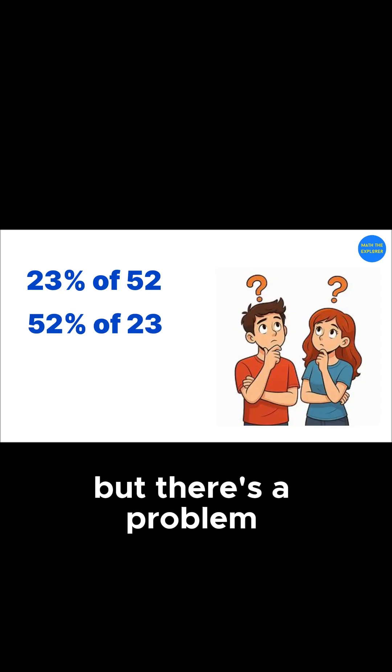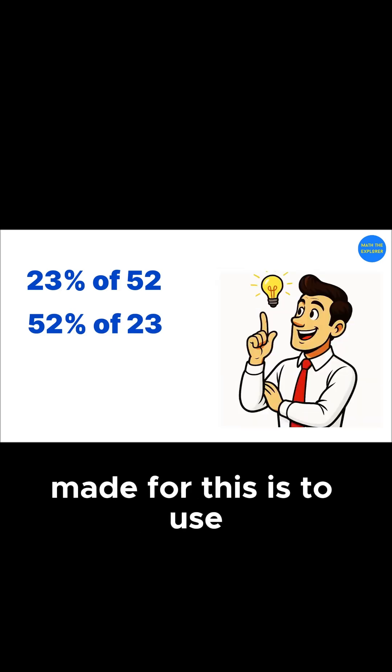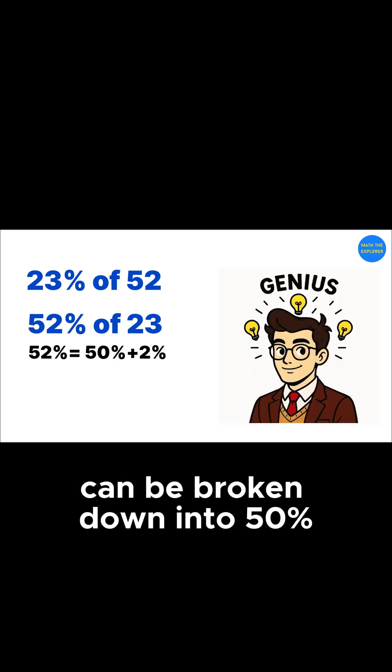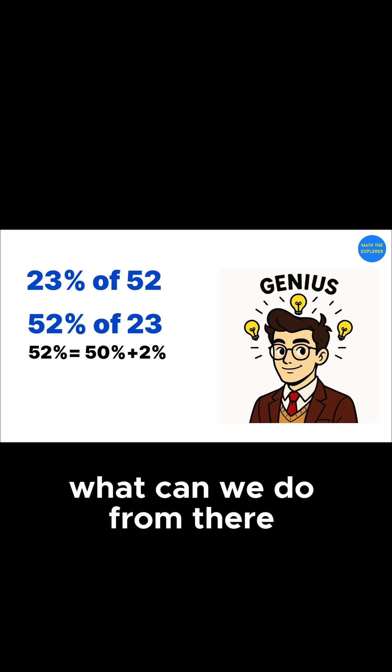But there's a problem. There's no easy way to calculate it. The solution is to use a little bit of extra thinking. Since 52% can be broken down into 50% plus 2%, what can we do from there?